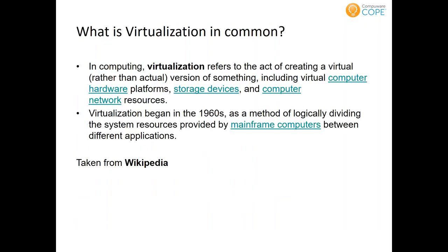What is virtualization in common? From Wikipedia: virtualization refers to the act of creating a virtual rather than actual version of something, including virtual computer hardware platforms, storage devices, and computer network resources. Virtualization is not new — it started in the 1960s as a method of logically dividing system resources provided by mainframe computers to be shared between different applications. Virtual machines, VM, are also a kind of virtualization.